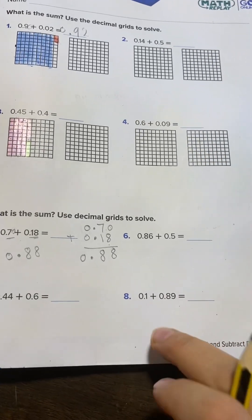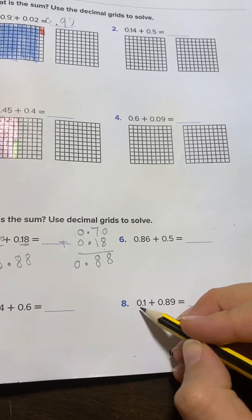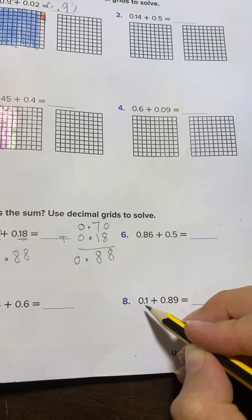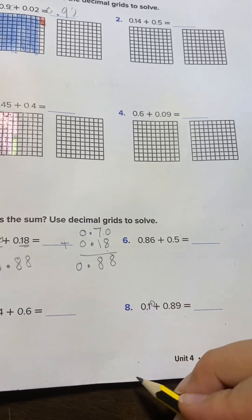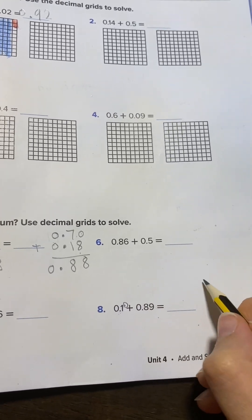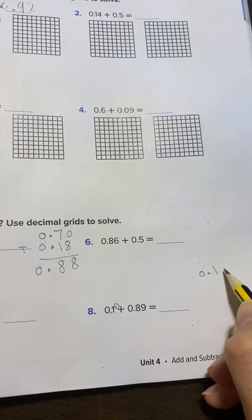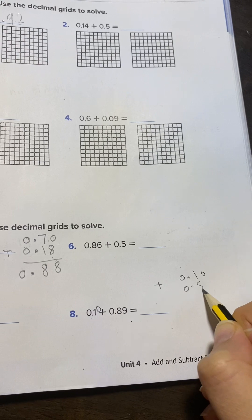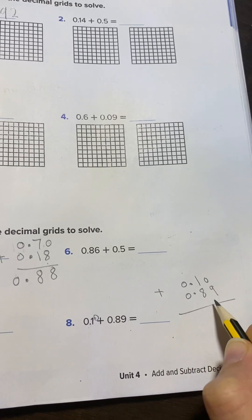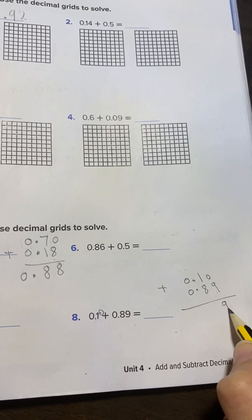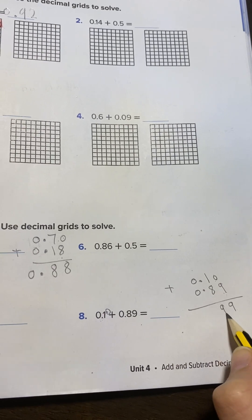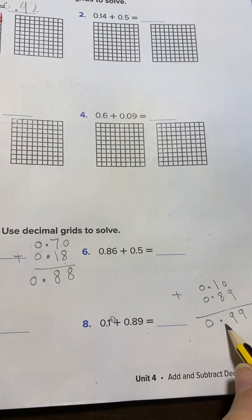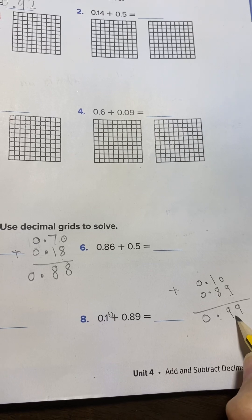Let's take another example — number 8. We have 0.1. How do you make this hundredths? You will add a 0, so it will be 0.10 plus 0.89. 9 plus 0 is 9. 8 plus 1 is 9, and the 0 goes down. So the answer is 99 hundredths, or 0.99.